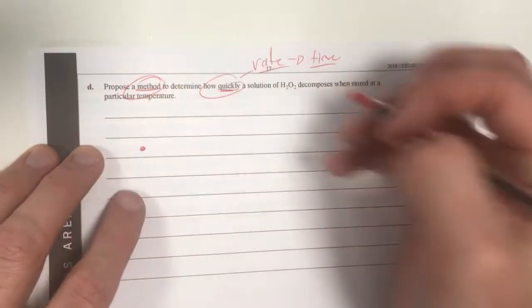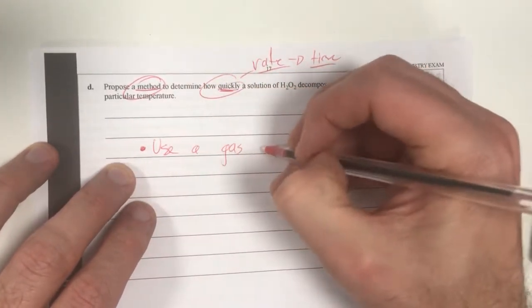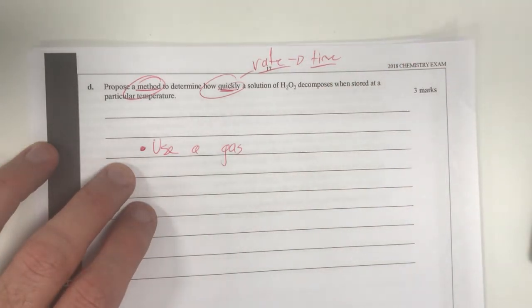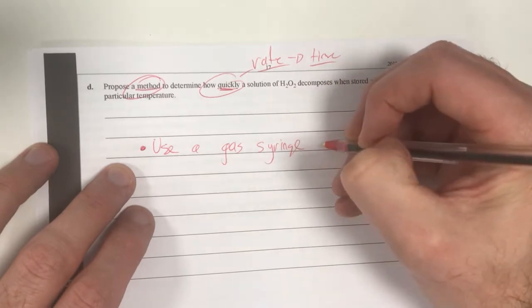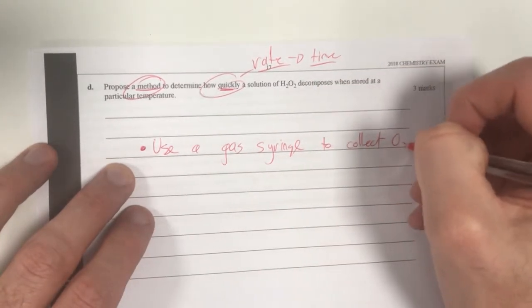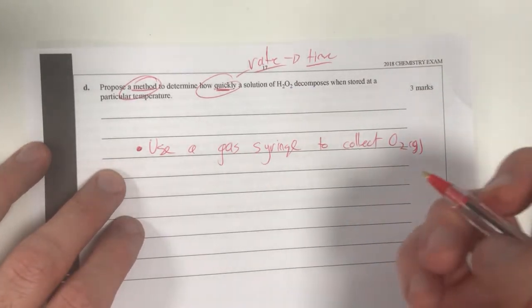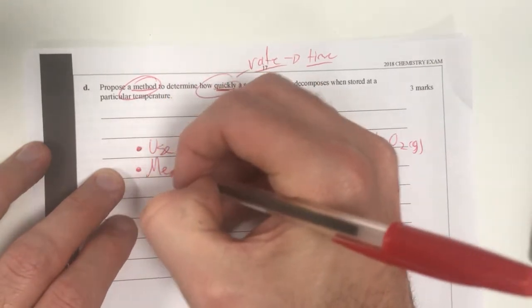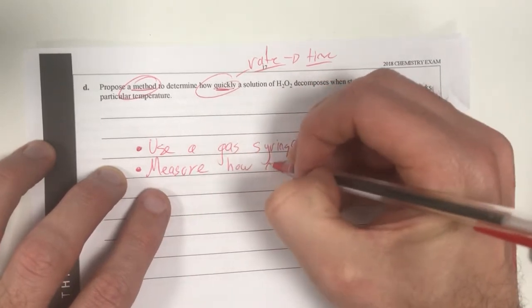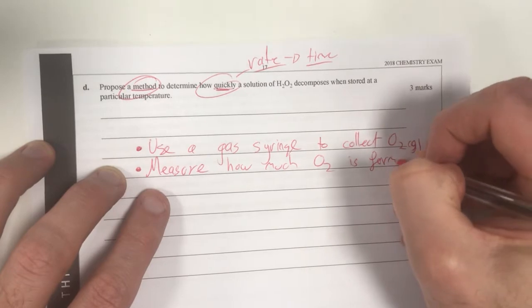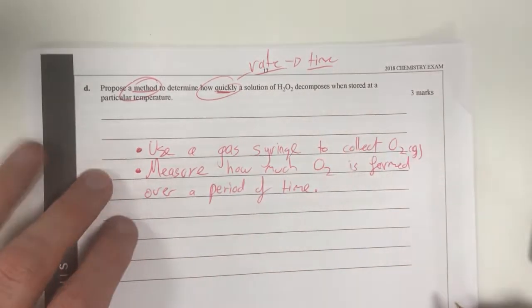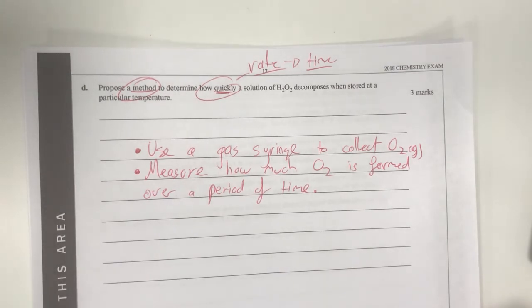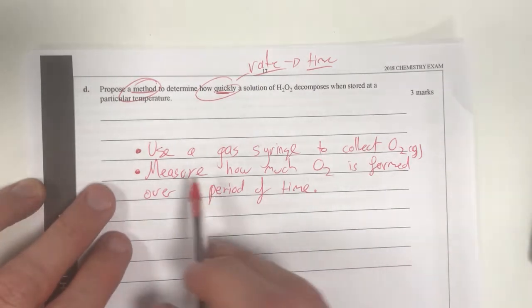I could use a gas syringe, probably use a gas syringe to collect my oxygen. So if I do that, I would use a gas syringe to collect the O₂ gas. I'm going to start off with that. I would like to measure - because it has to be rate, it has to be about time - measure how much O₂ is formed over a period of time. So how quickly it will decompose. That's only two marks.